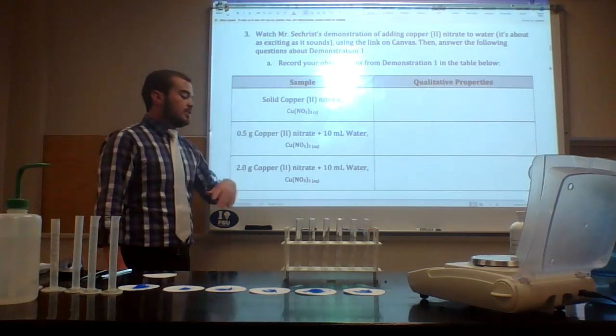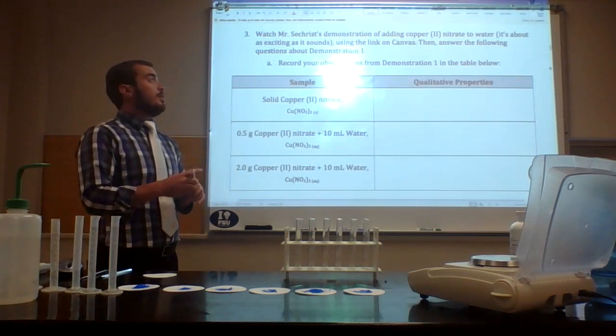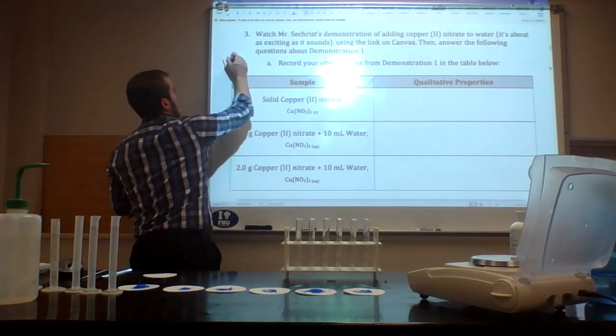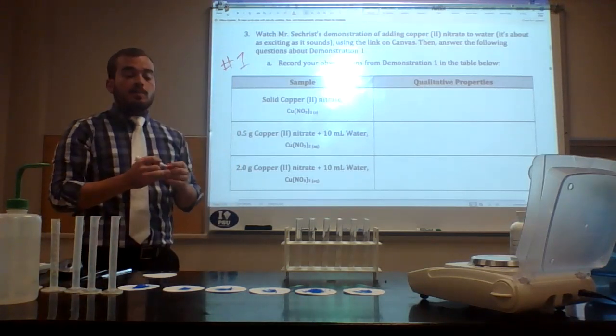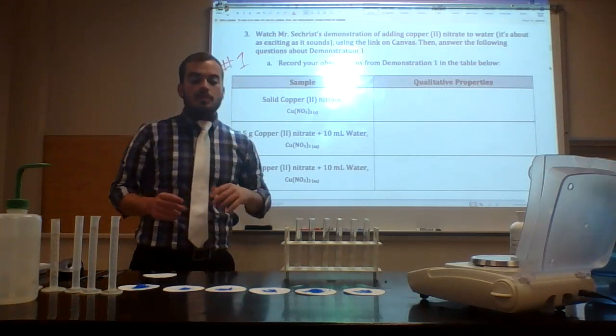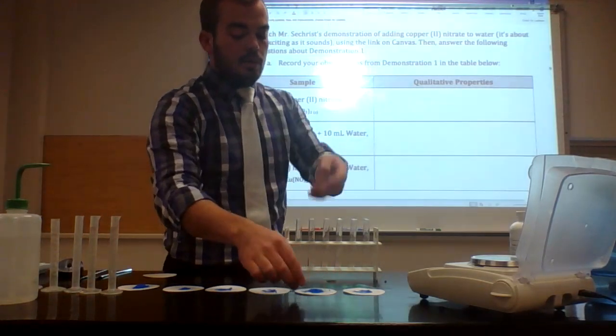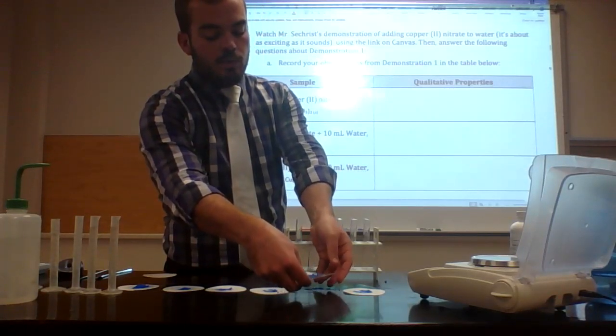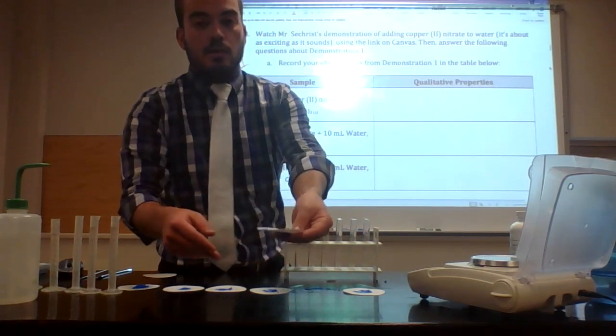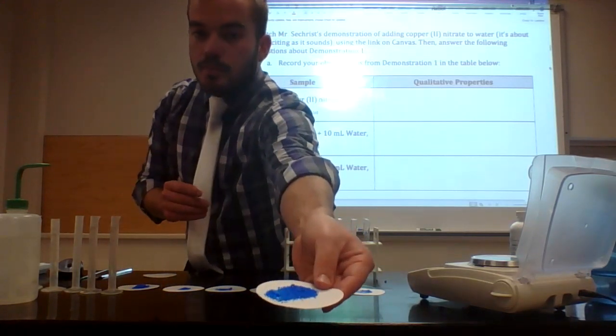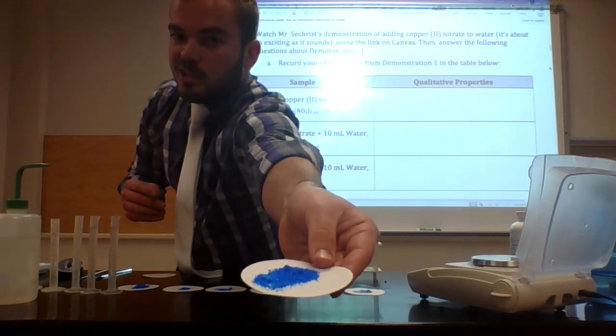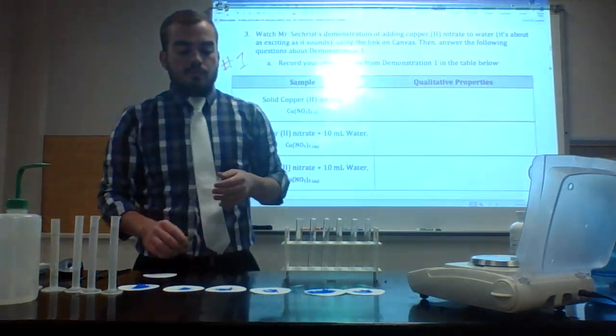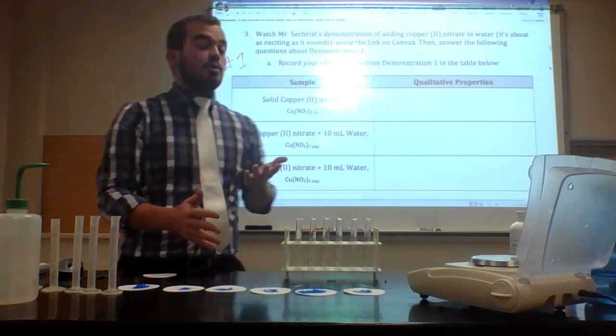This is demonstration number one. We're at problem number three in part one of the Unit 4 packet. In these demos we're going to be looking at copper(II) nitrate. Copper(II) nitrate is an ionic compound containing the nitrate polyatomic ion. Copper(II) nitrate kind of looks like shiny blue salt, sparkly blue. Sorry it's not a great picture, this is my Chromebook, so got to work with what we have.